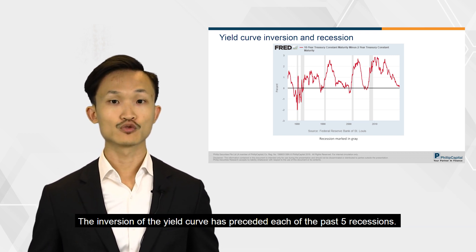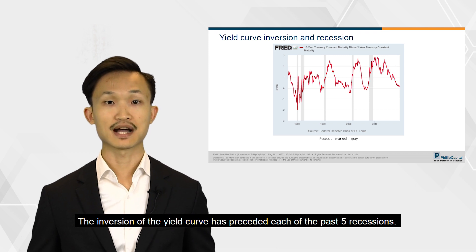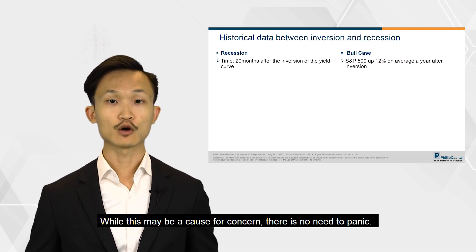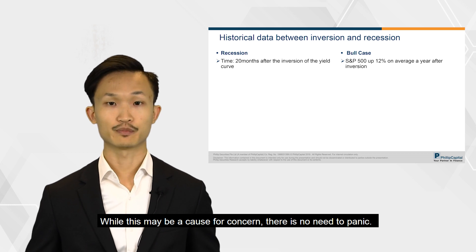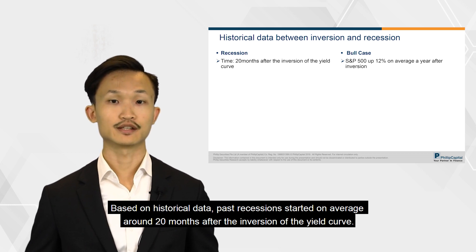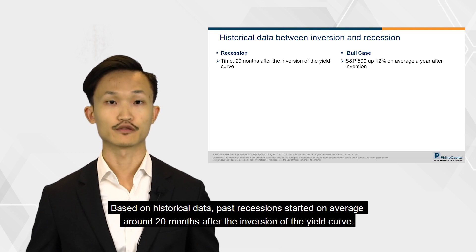The inversion of the yield curve has preceded each of the past five recessions. While this may be a cause of concern, there is no need to panic. Based on historical data, the last recession started on average around 20 months after the inversion of the yield curve.